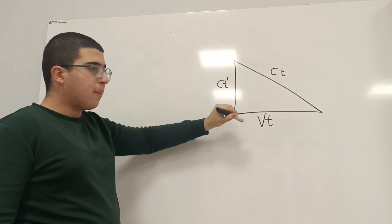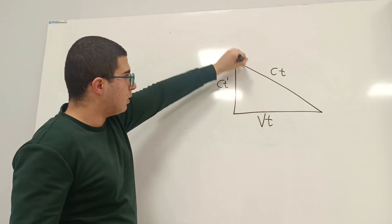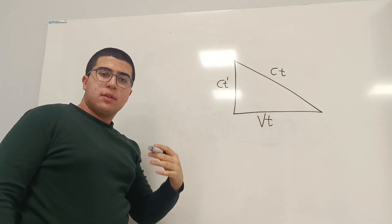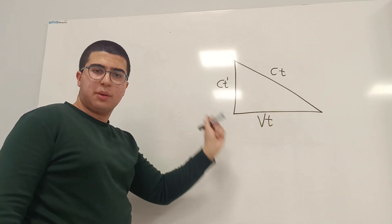But for you, the photon is moving diagonally, not up and down. It's going like this, and this, and this. Because for you, the ship is moving, and the photon is moving with the ship.